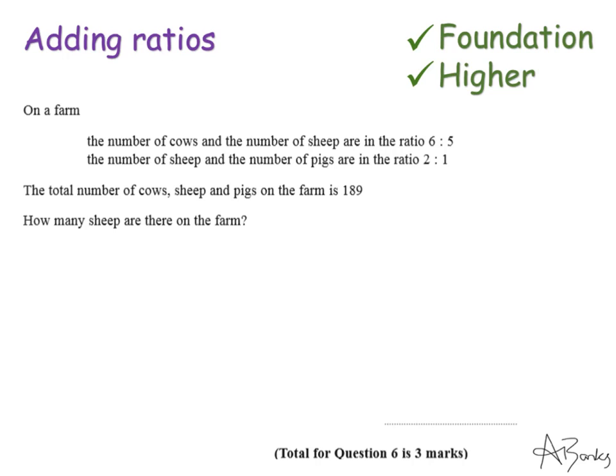So the first part of this question is going to be to add these two ratios I've been given together to form a new ratio of cows to sheep to pigs. Once I have that ratio I can answer the second part of the question which is finding out how many sheep there are on the farm.